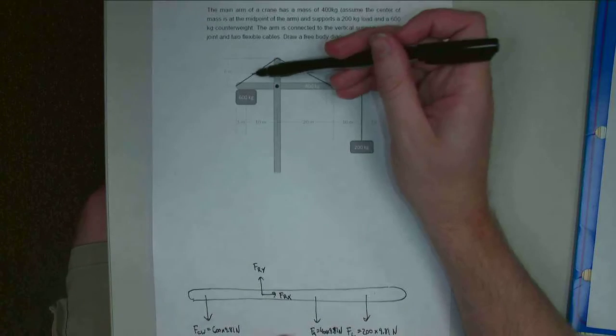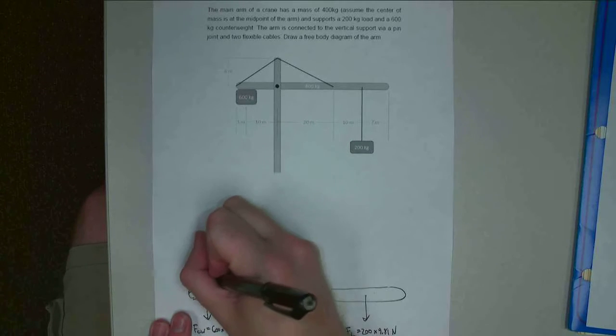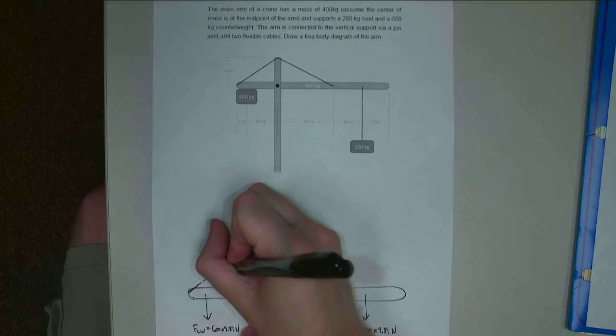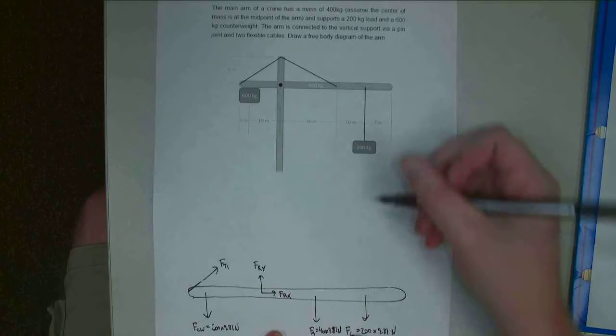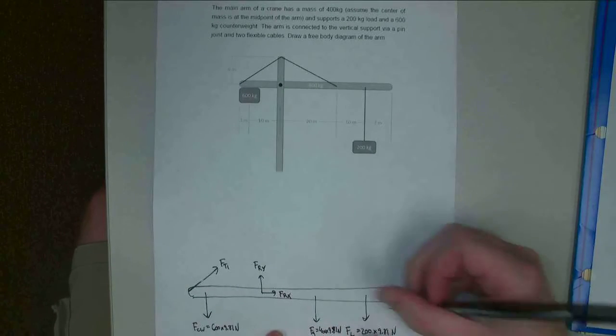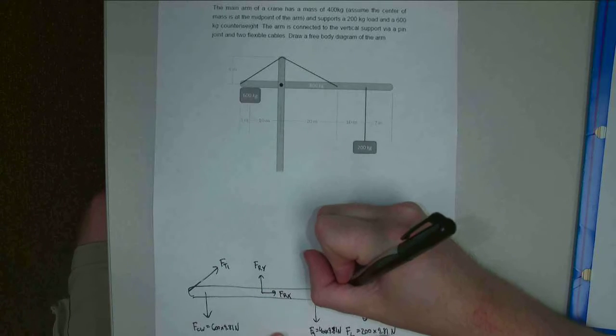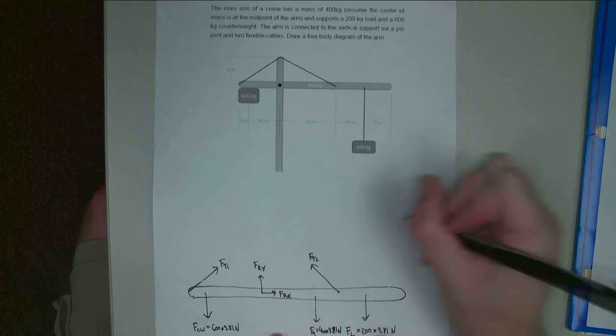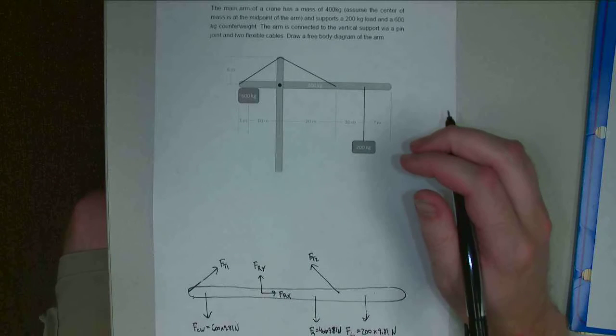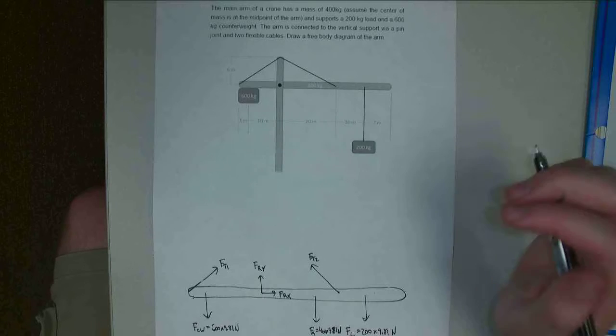So the last thing I need to do is include these tension forces. And so the tension force is on the end there. I'm going to have FT1. And the tension force will connect between the center of the arm and the load point. So FT2. And that's going to be all of the forces that are acting on the arm itself.